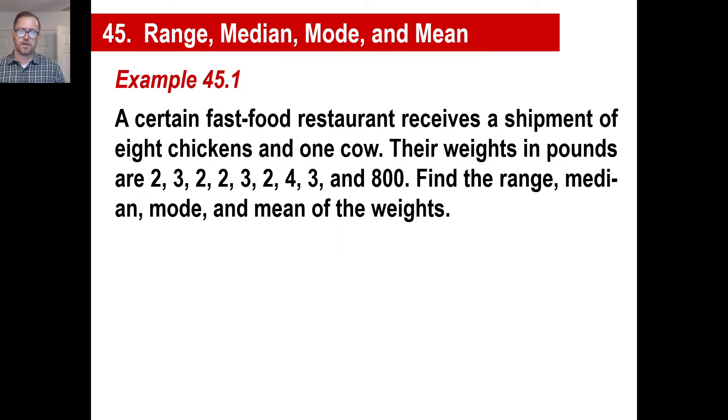A certain fast food restaurant receives a shipment of eight chickens and one cow. Their weights in pounds are 2, 3, 2, 2, 3, 2, 4, 3, and 800. It's a big chicken. Find the range, median, mode, and the mean. Okay.